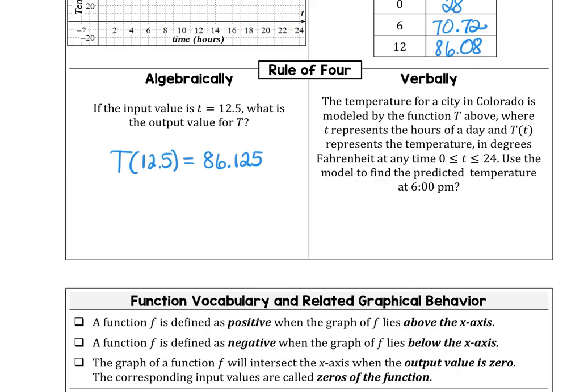And then finally, verbally, the temperature for a city in Colorado is modeled by the function T, where lowercase t represents the hours of the day and T(t) represents the temperature in degrees Fahrenheit. Our task is to use the model to find the predicted temperature at 6:00 PM.